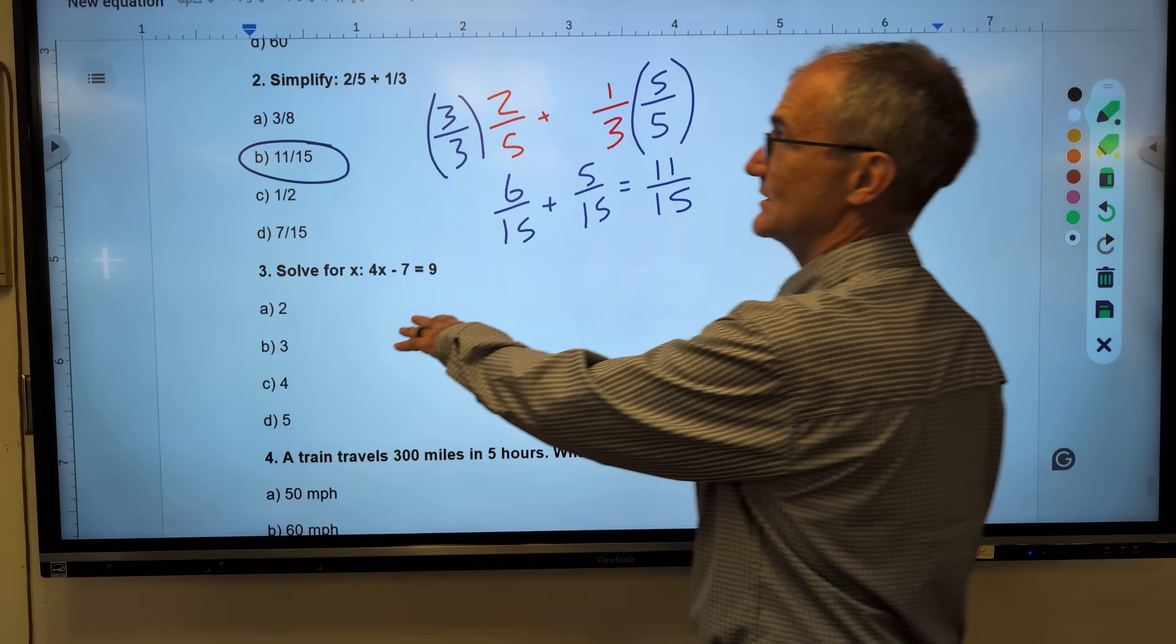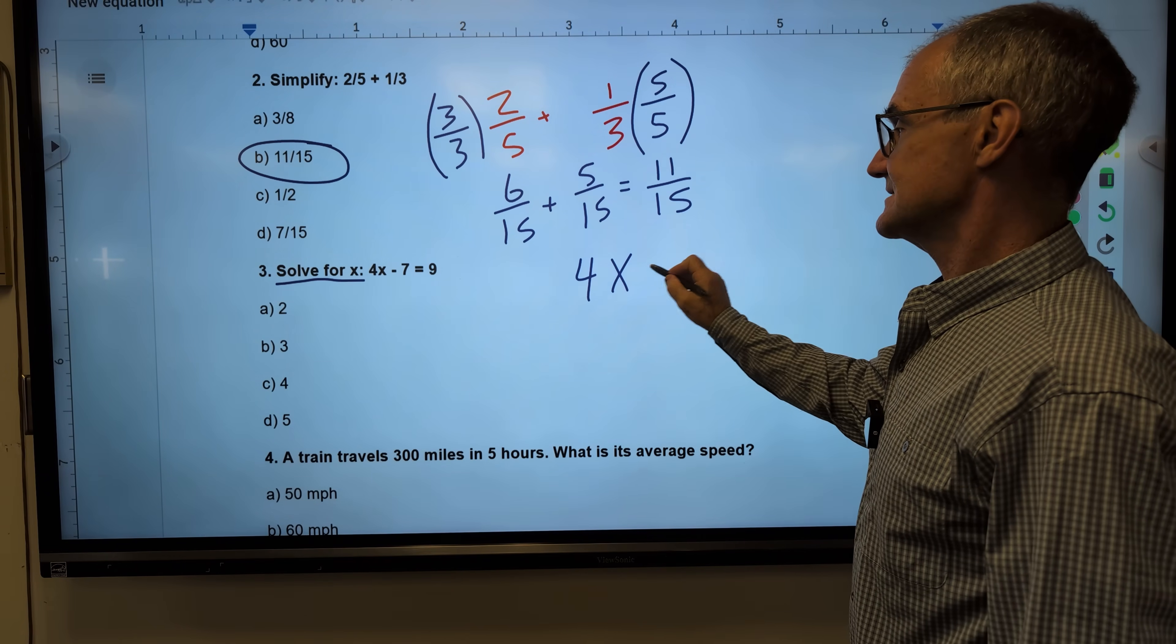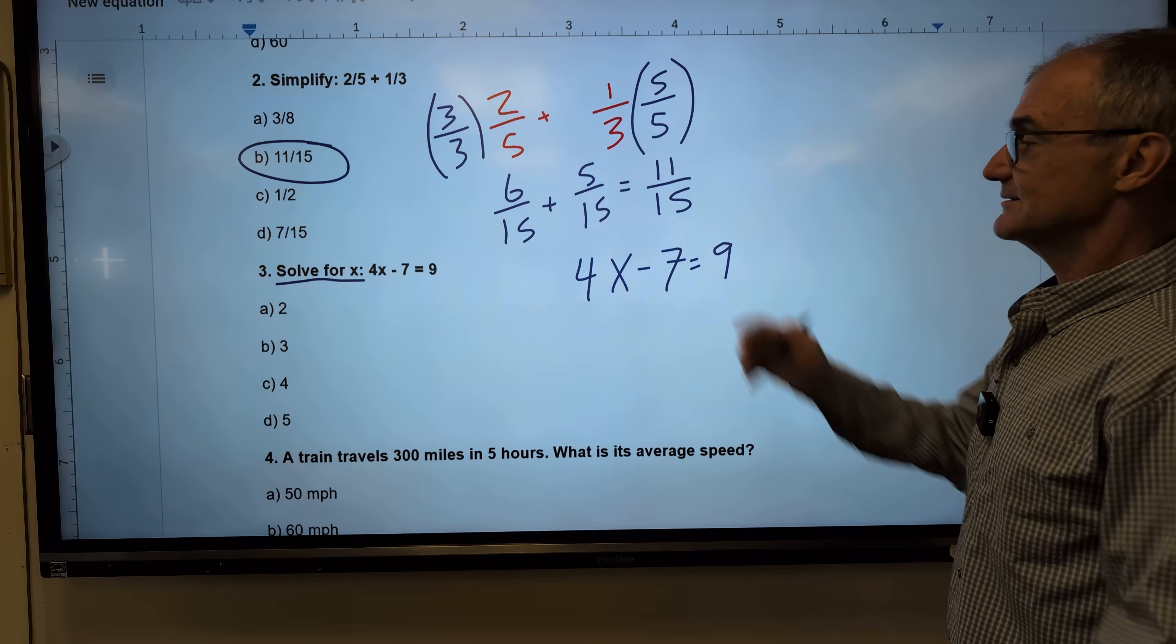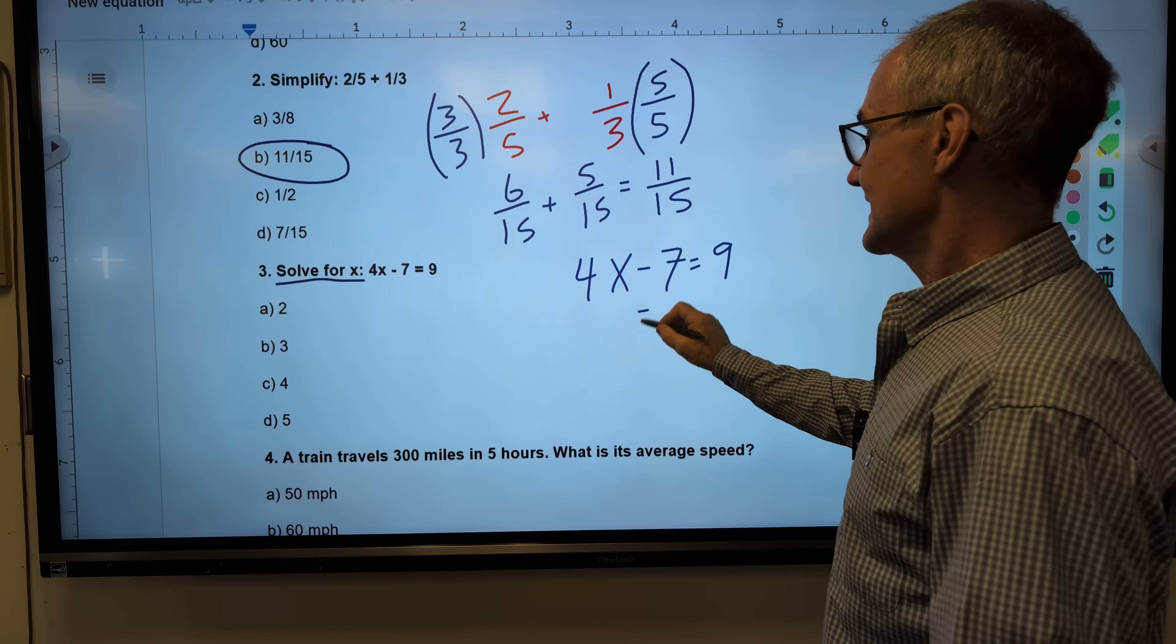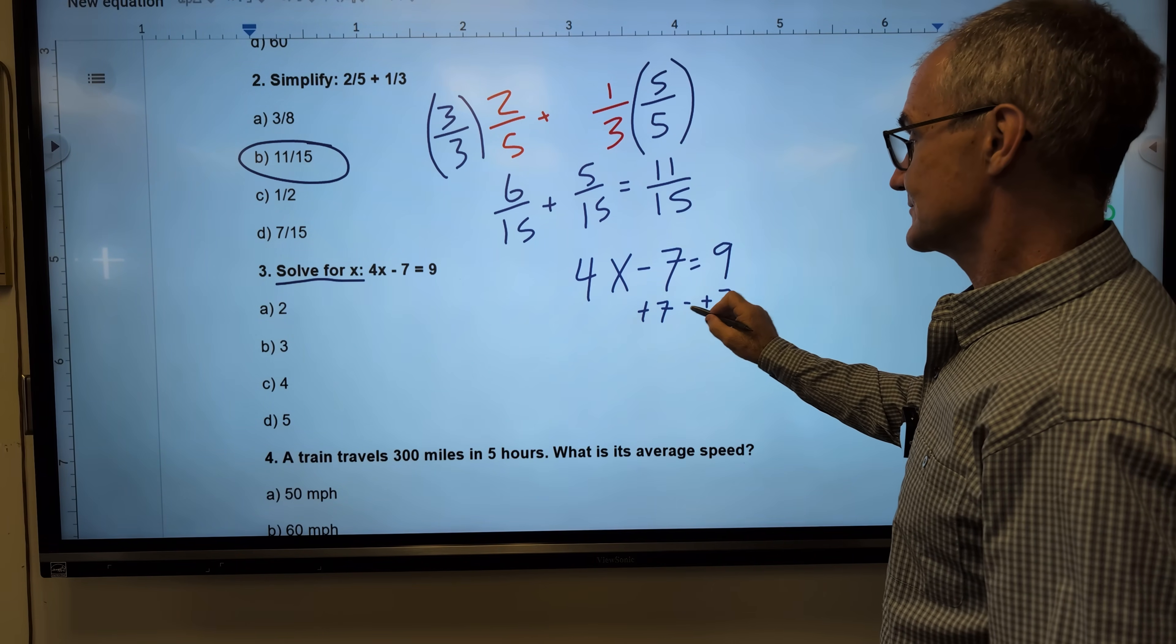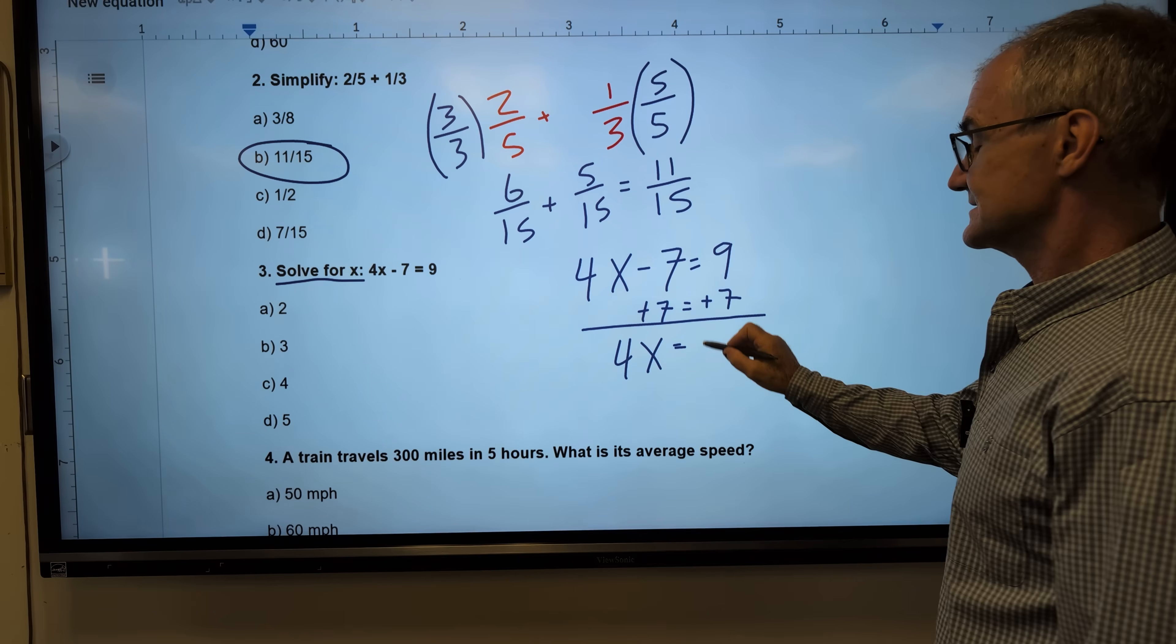Number 3, this is an equation, different than an expression. Here, I need to solve for x. I have 4x minus 7 equals 9. The goal in solving an equation is to get that x by itself, so I need to isolate it. I've got to get rid of that 7. I am subtracting it here. I get rid of it with a reverse operation. I add 7. I just can't add 7 to the left. I've got to keep that thing balanced, so I have to add 7 to the right. My equal sign is right here. 4x minus 7 plus 7. That equals 0, so that gives me 4x by itself. 9 plus 7 is 16.